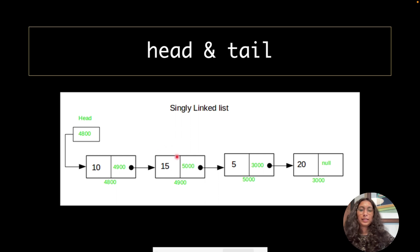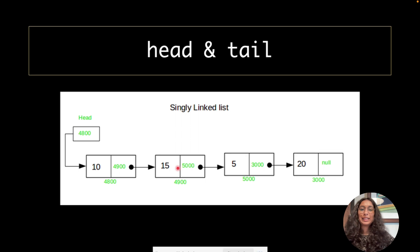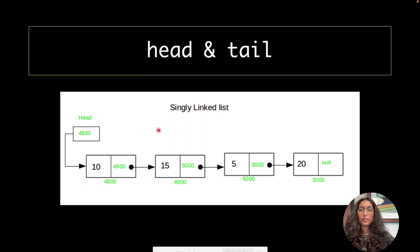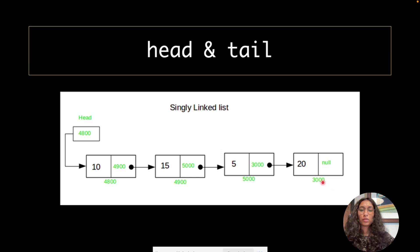That's why it is called a singly linked list. One of the other most important things to mention is head and tail. In a linked list, the first node is referenced by the head and the last node is referenced by the tail. This way we can manipulate our data and add items to the end of our list.